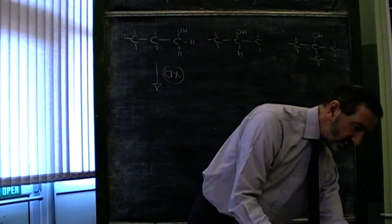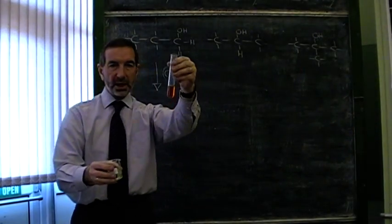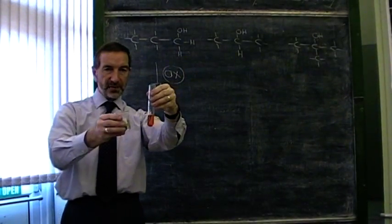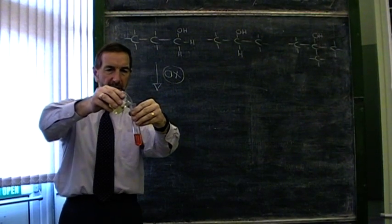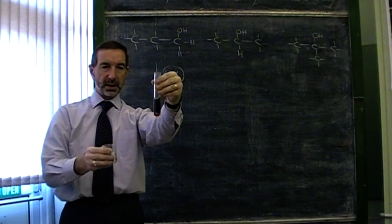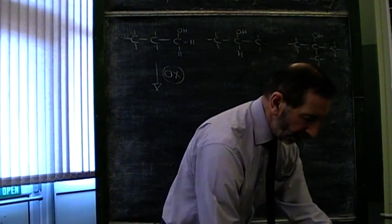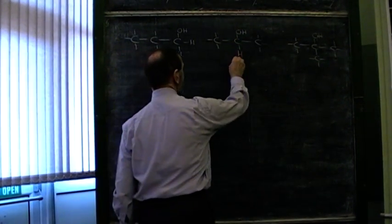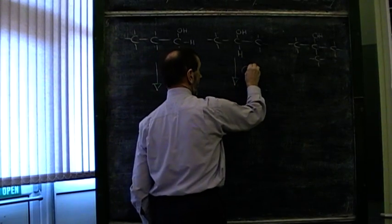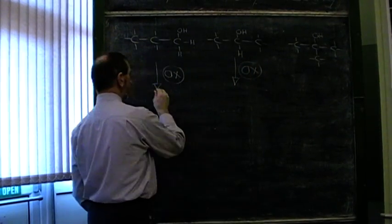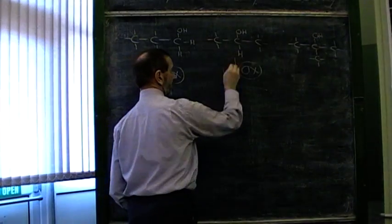Let's just reinforce that using the other oxidising agent, the acidified dichromate. Does this one turn green? Yes, it does. So, we've confirmed that you can oxidise a secondary alcohol. This can be oxidised, this can be oxidised.